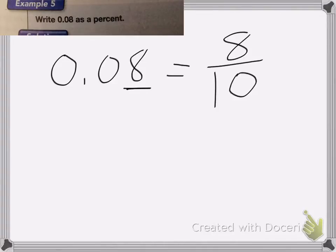Okay, so here we have 0.08 as a percent. We know that the 8 is in the hundredths place again. So this is the same as 8 hundredths, which then we can change into 8%.